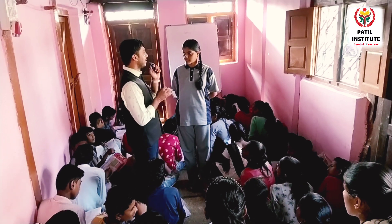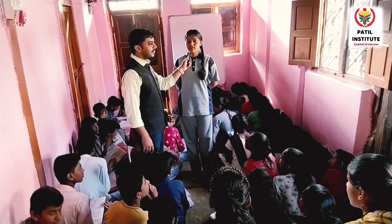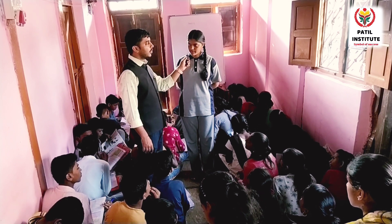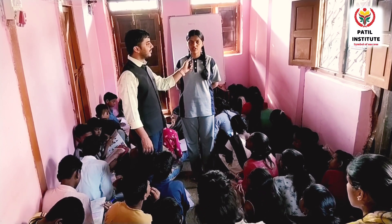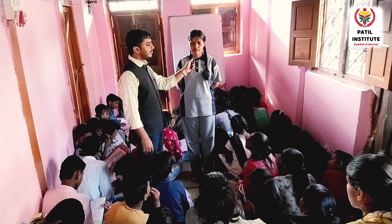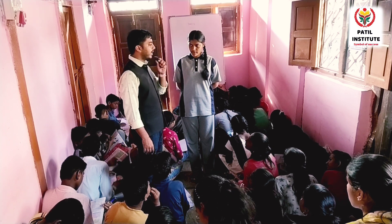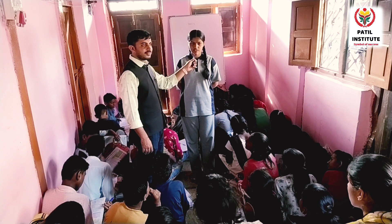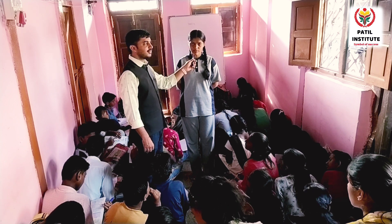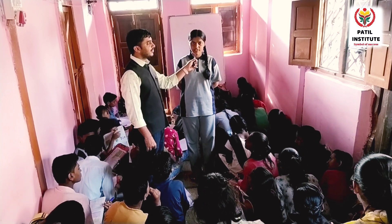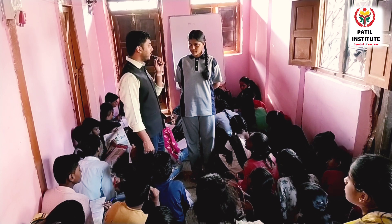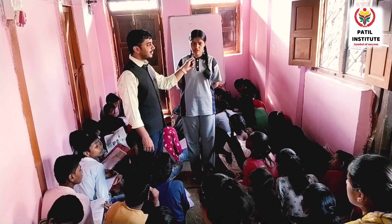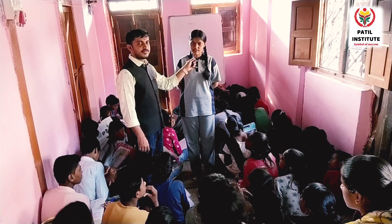Kepler's first law: The orbit of a planet is an ellipse with the sun at one of the foci. Kepler's second law: The line joining the planet and the sun sweeps equal areas in equal intervals of time. Kepler's third law: The square of the period of revolution around the sun is directly proportional to the cube of the mean distance from the planet to the sun. Centripetal force: A force acts on any object moving along a circle directed towards the center of the circle — this is called centripetal force.